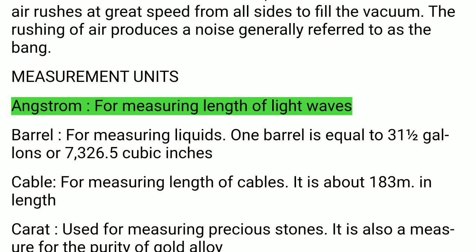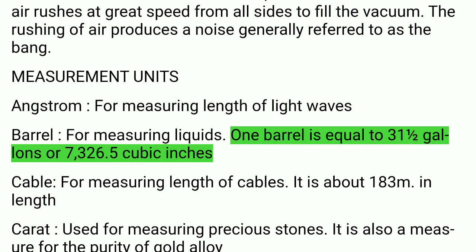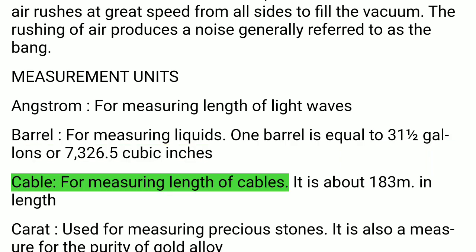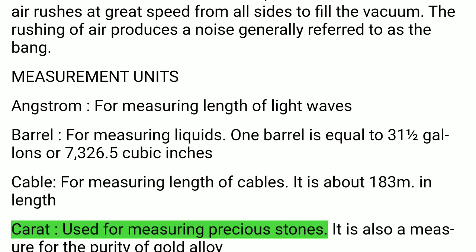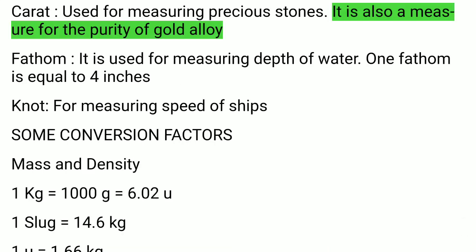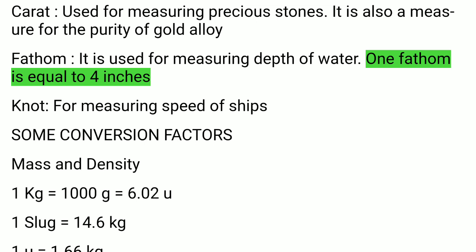Measurement Units: Angstrom — for measuring the length of light waves. Barrel — for measuring liquids; one barrel equals 31.5 gallons or 7326.5 cubic inches. Cable — for measuring the length of cables, approximately 183 meters. Carat — for measuring precious stones and the purity of gold alloys. Fathom — for measuring depth of water; one fathom equals 6 feet. Knot — for measuring speed of ships.